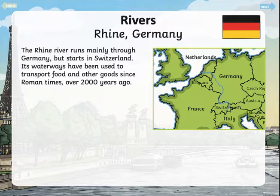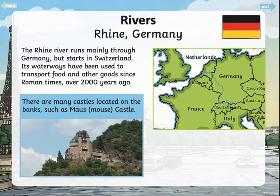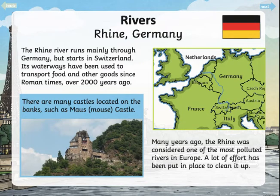Its waterways have been used to transport food and other goods since Roman times, over 2,000 years ago. There are many castles located on the banks, such as Maus Castle. Many years ago, the Rhine was considered one of the most polluted rivers in Europe, but a lot of effort has been put in place to clean it up.